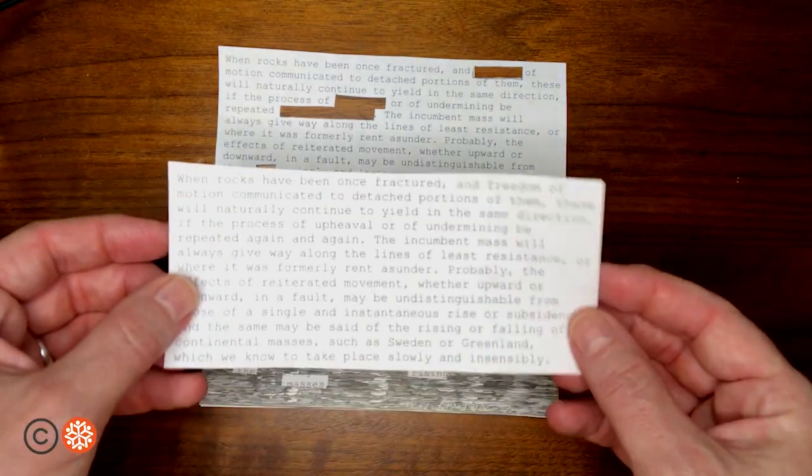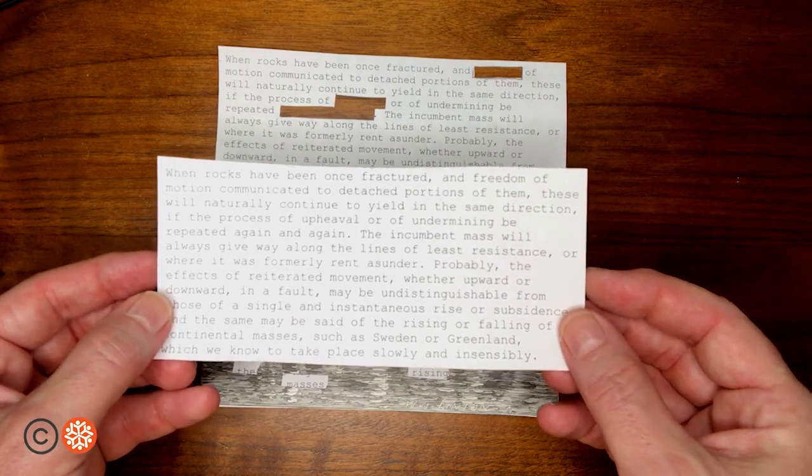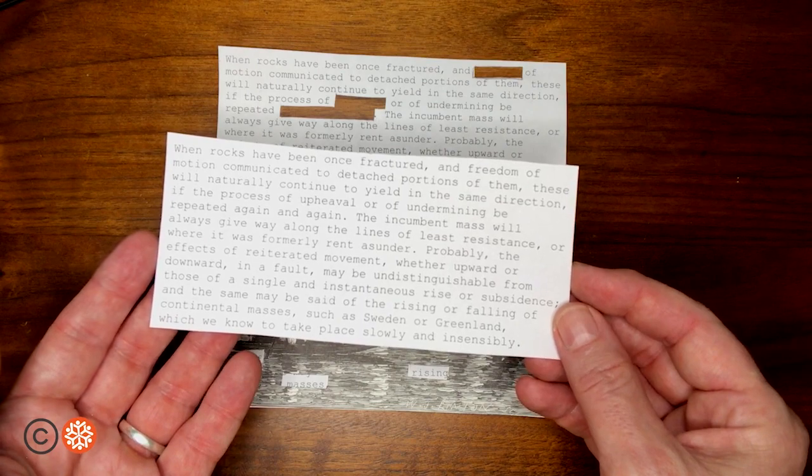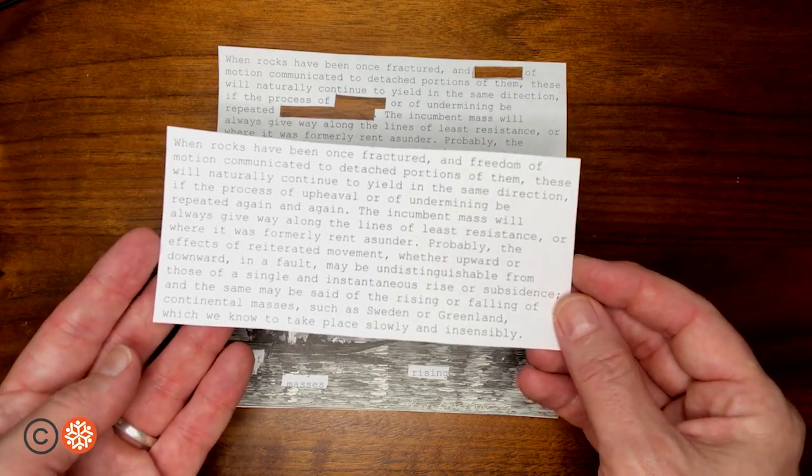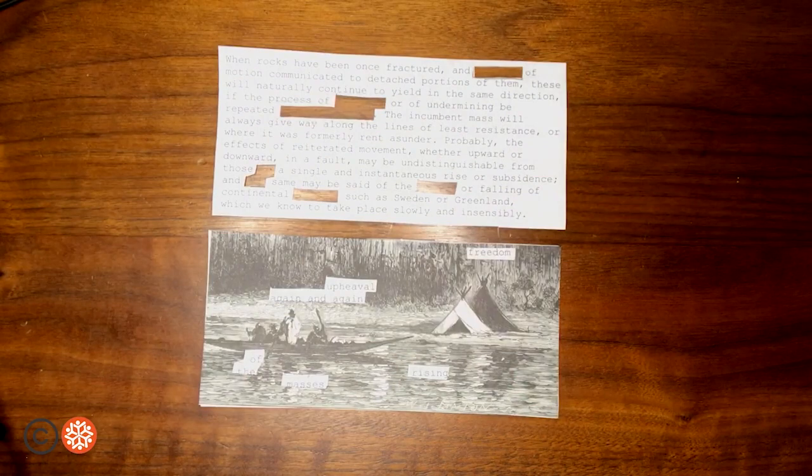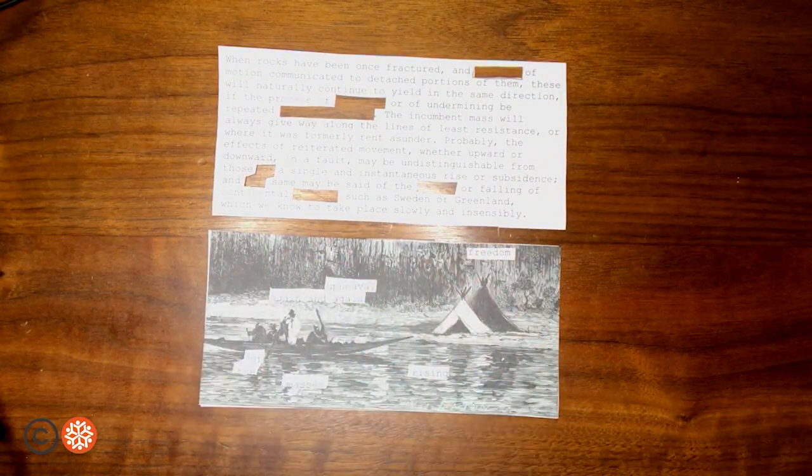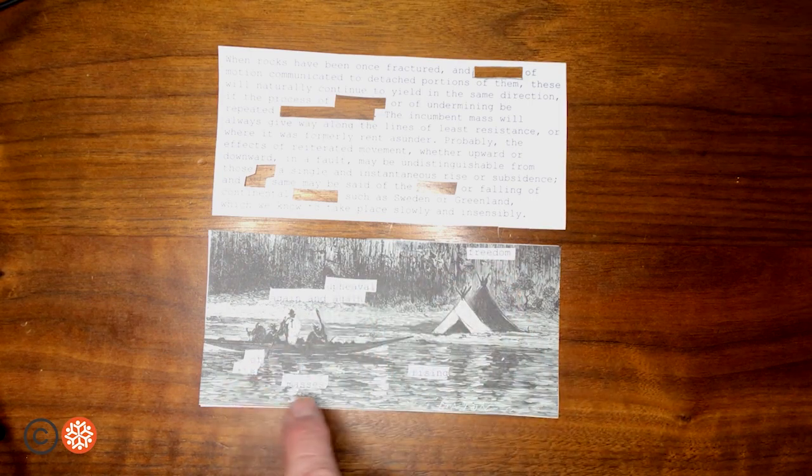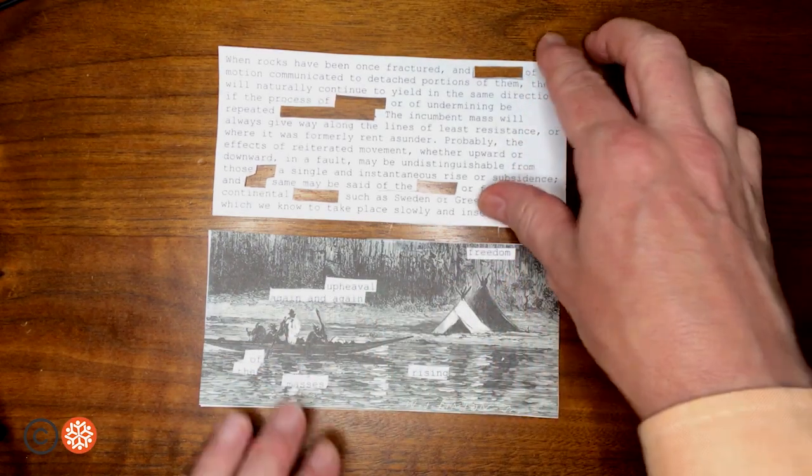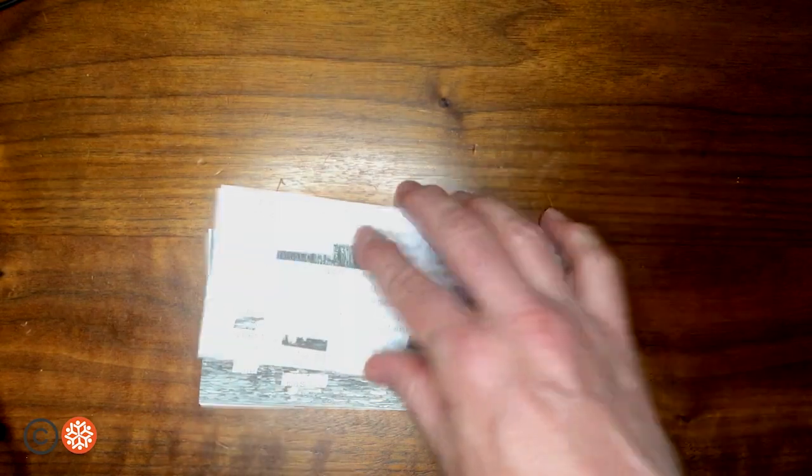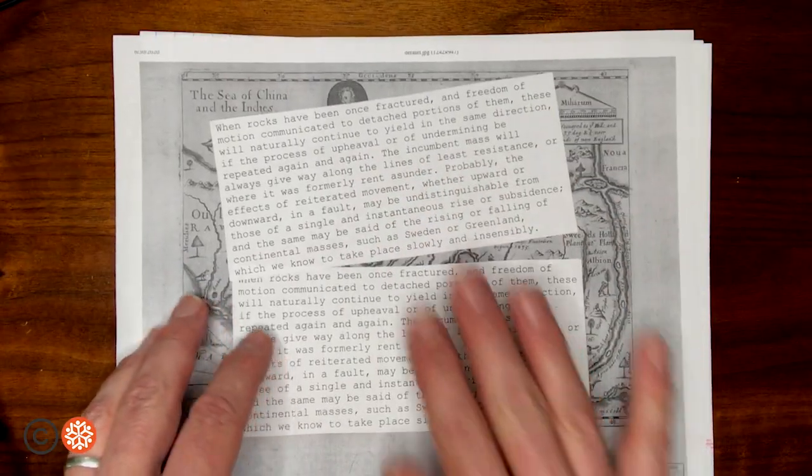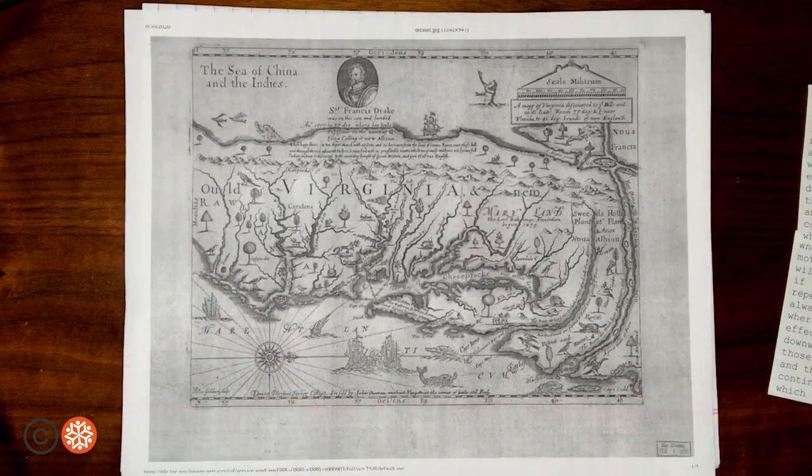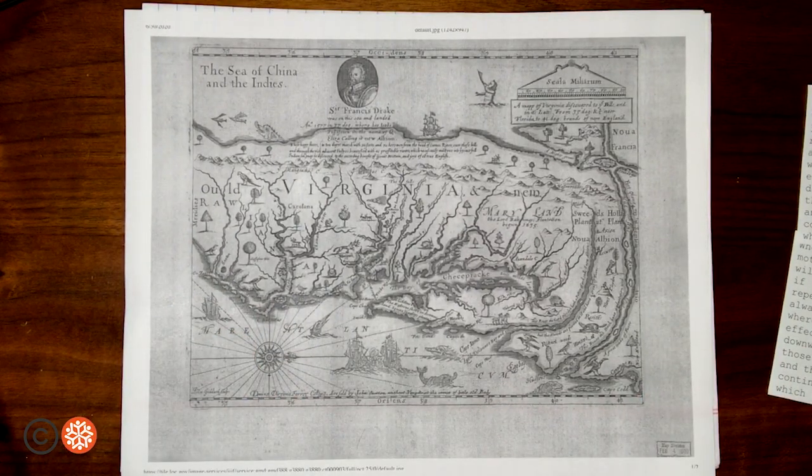What I like about this is that I took a paragraph from a book titled Principles of Geology published in 1830 by Lyle and took a paragraph about a geological force and created it into a poem about the force of freedom. Now, like I said, I used scissors to cut out these windows. Maybe you don't have any scissors available to you, so I want to show you this process using the same paragraph but a different image in a way where you don't need to use any cutting implements.